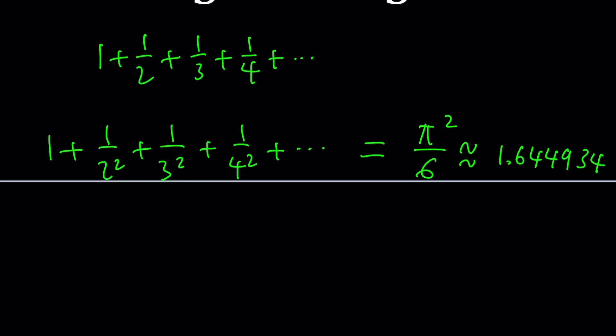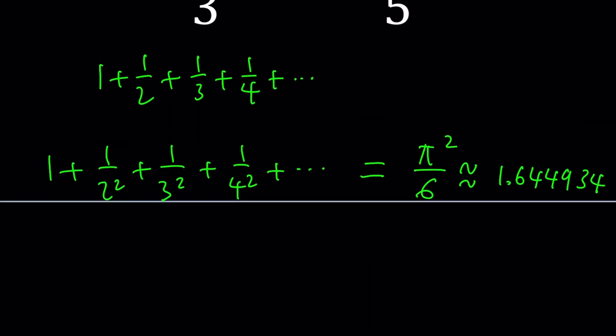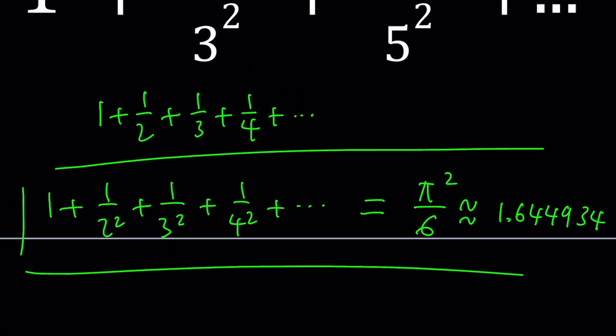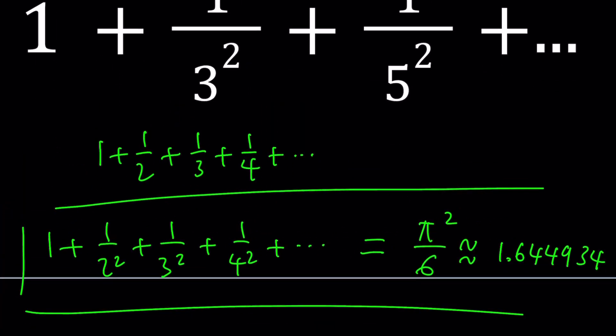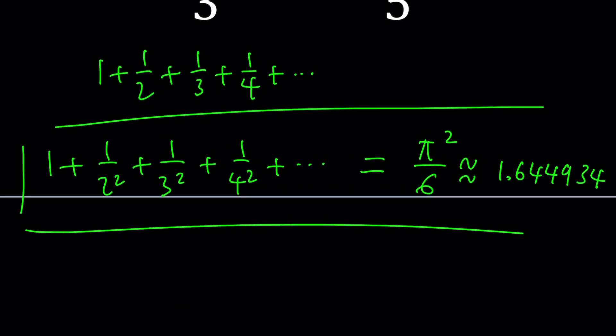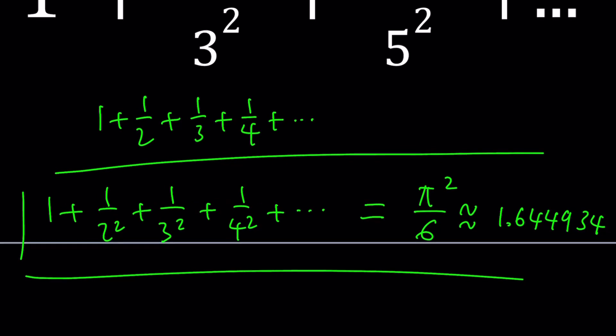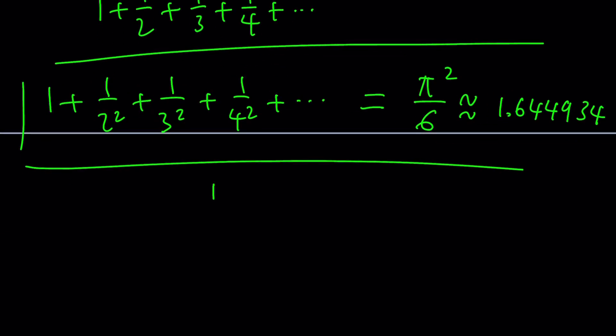But for this problem, we need the odds only. So the question is: we know this sum, how can we get the sum of the odd ones? The answer is easy - by getting rid of the evens. The evens are the ones with even denominators: 1/2², 1/4², 1/6², and so on. Let's see how we can do that.